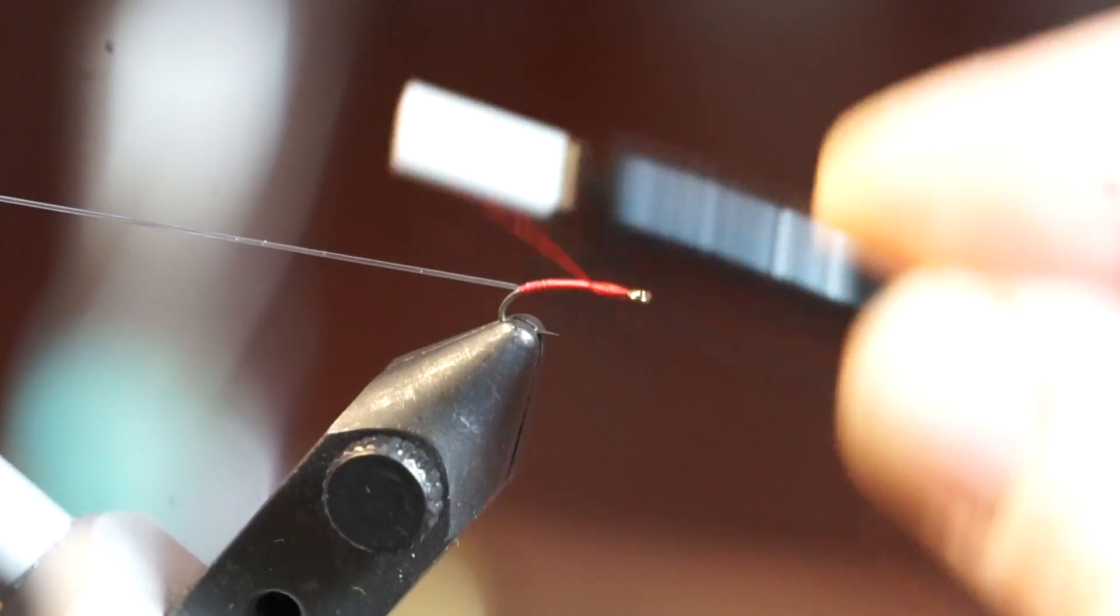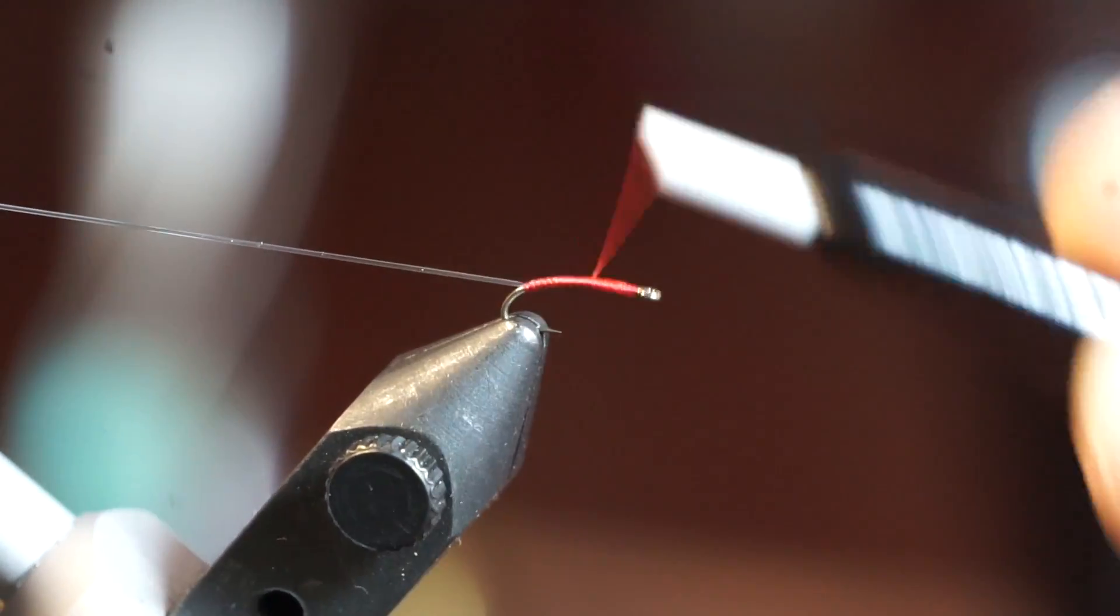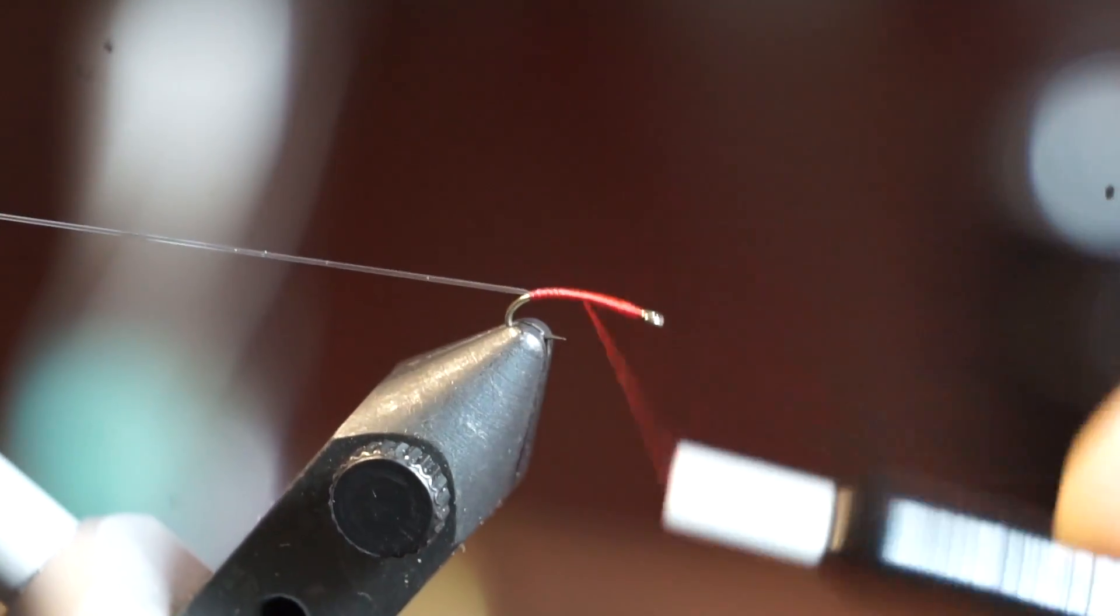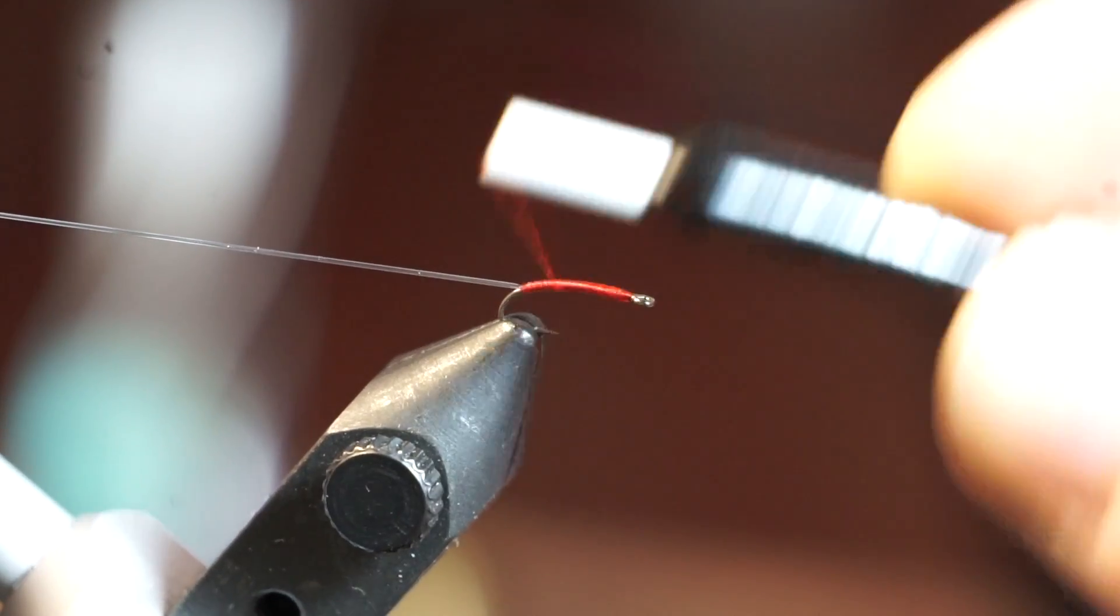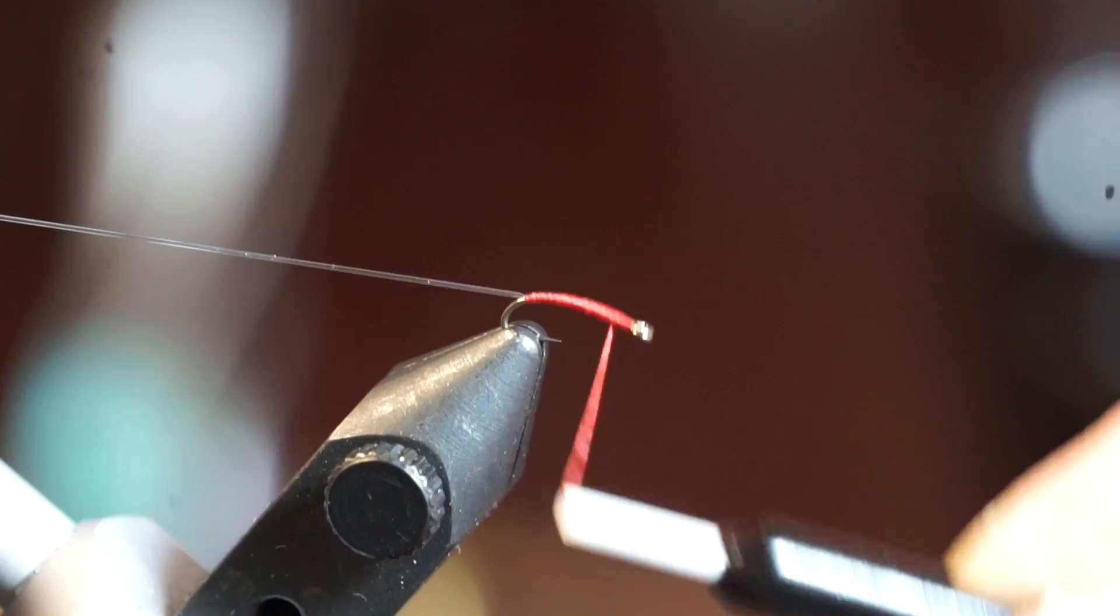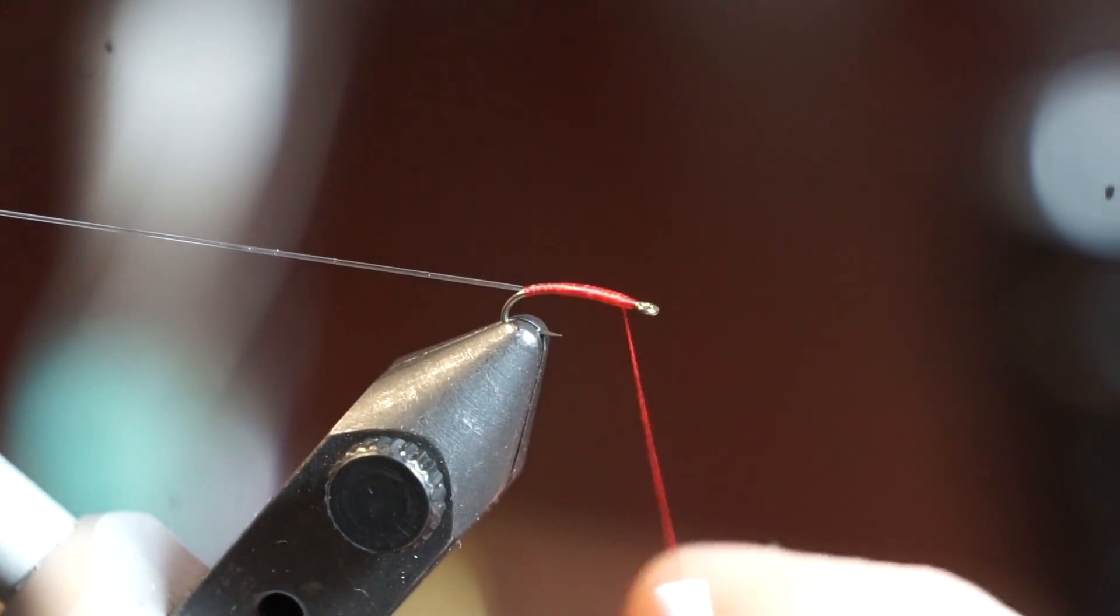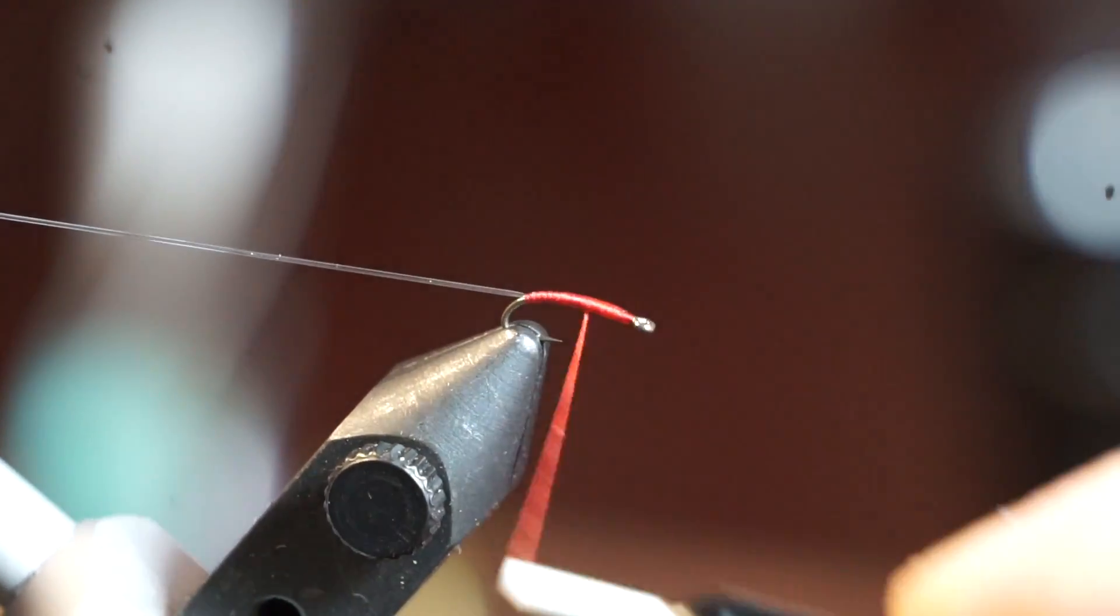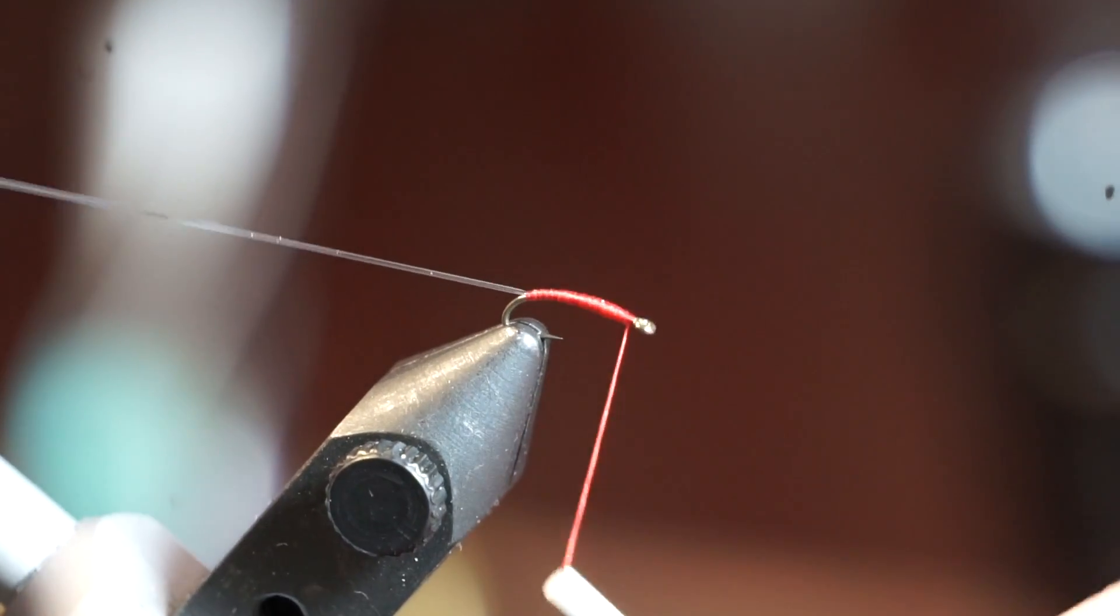Once you reach back up to the eye of the hook, then wrap back down the hook again, but only about two thirds of the way down before starting back up. Unspin your thread again to flatten it if need be. Go back down the hook shank again about a third of the way down and back up. This will create a nice taper on the fly.